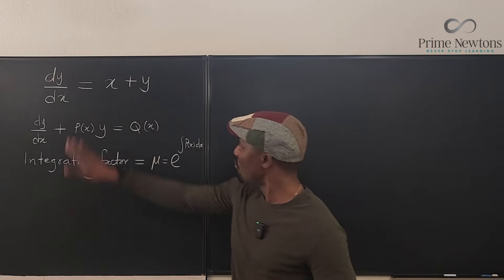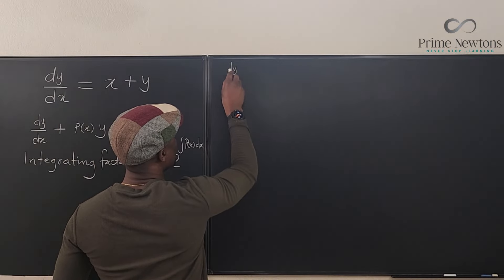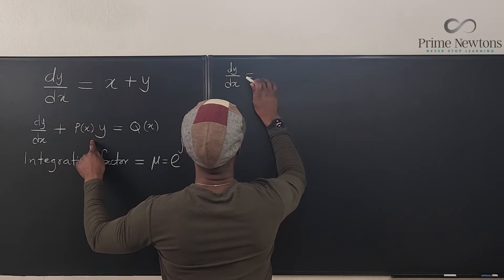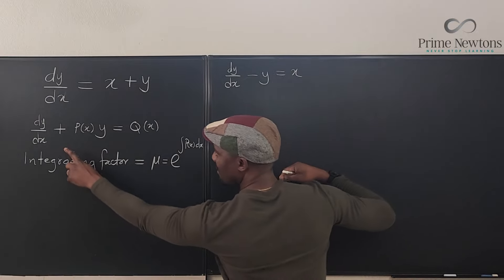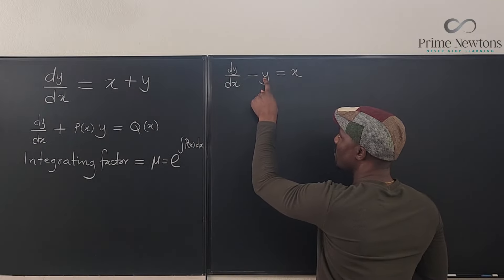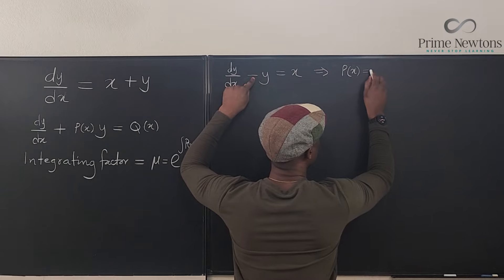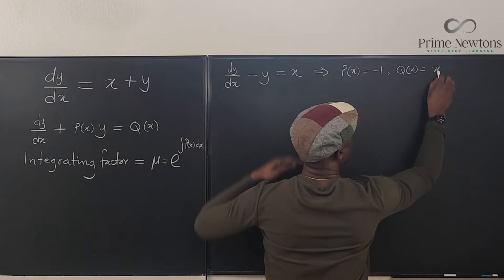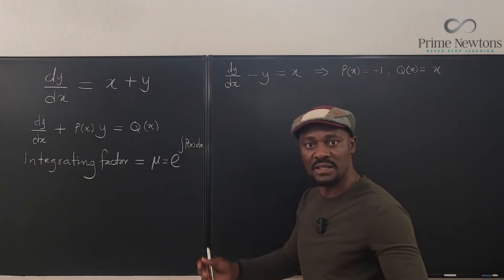The first mission is to write the equation in standard form. We can write dy/dx minus y equals X — that looks like the standard form now. Comparing with dy/dx + P(x)·y = Q(x), this implies that P(x) is equal to negative one, and the function on the right Q(x) is equal to X. So we have written the equation exactly as required by the standard form, and we can use our integrating factor.